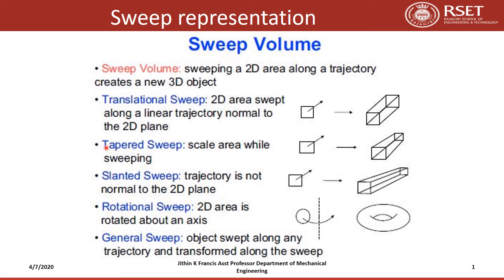In a tapered sweep, the cross-sectional area is scaled while sweeping. A regular 2D cross-sectional area is swept perpendicular to the 2D plane, but the sweeping happens in a tapered manner. In a slanted sweep, the trajectory is not normal to the 2D plane.